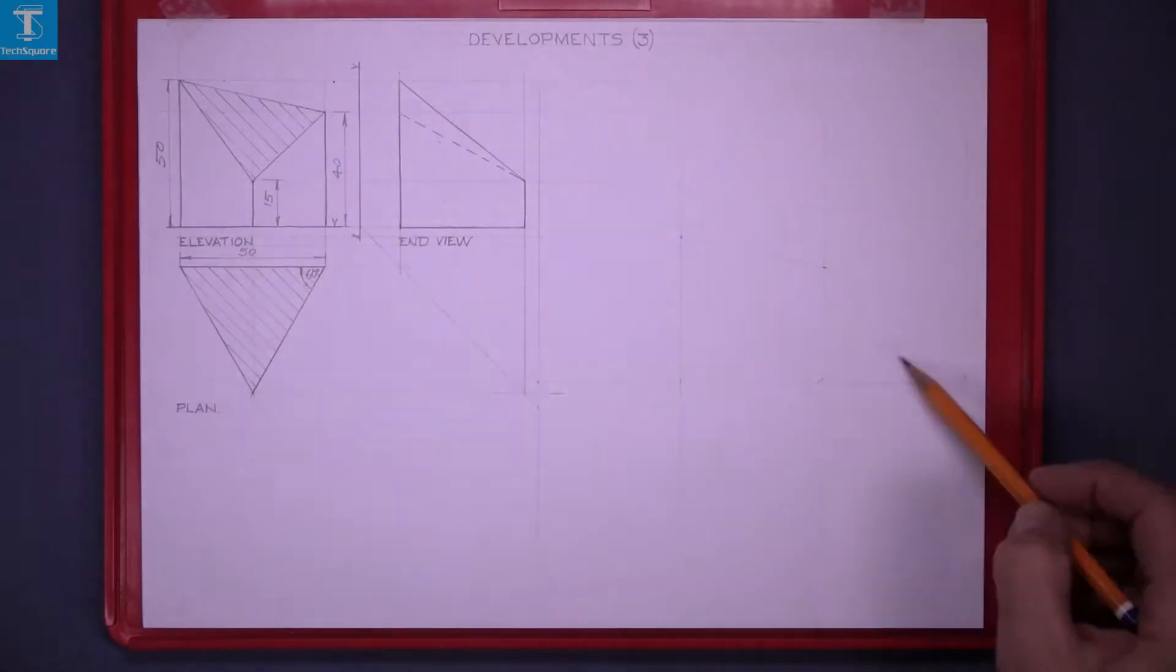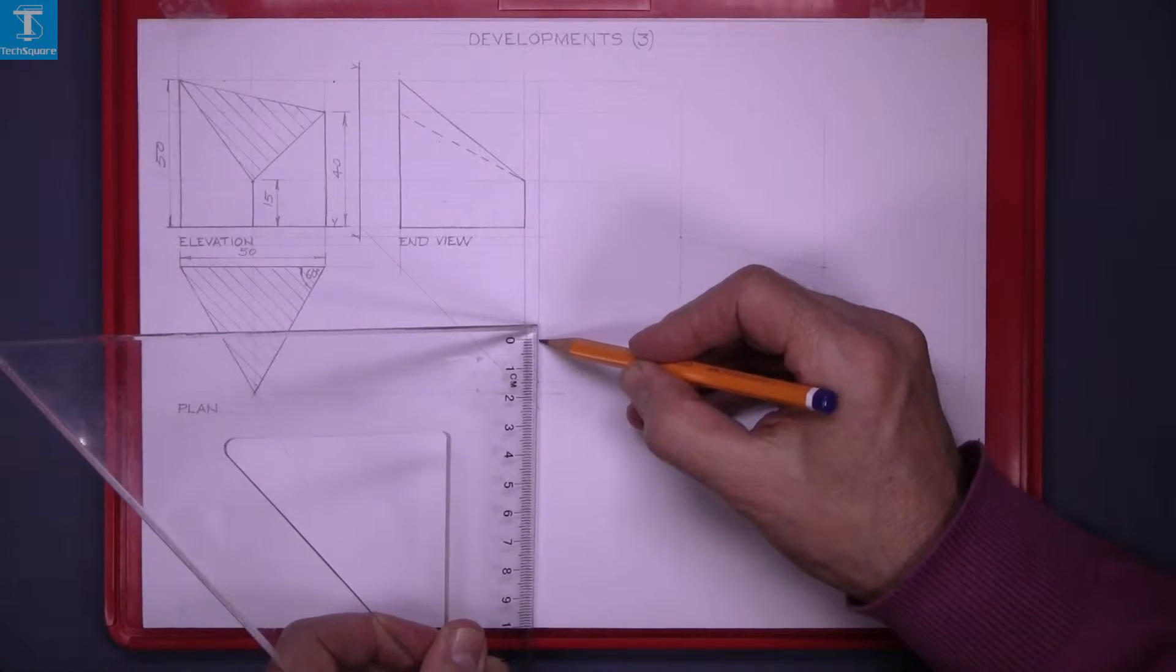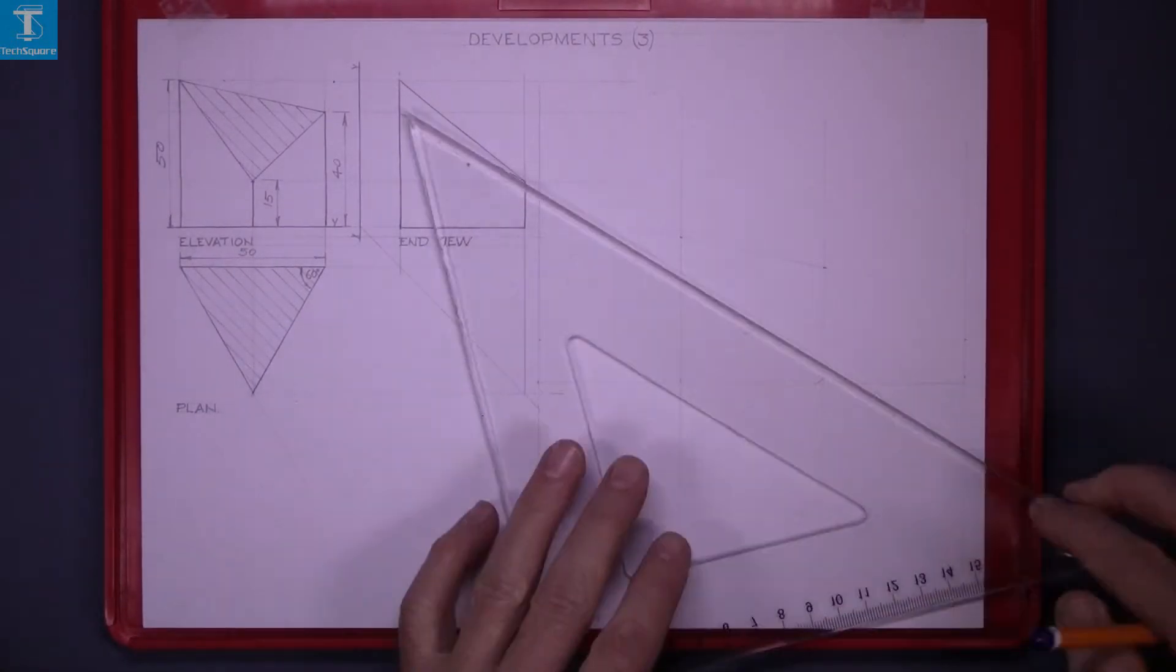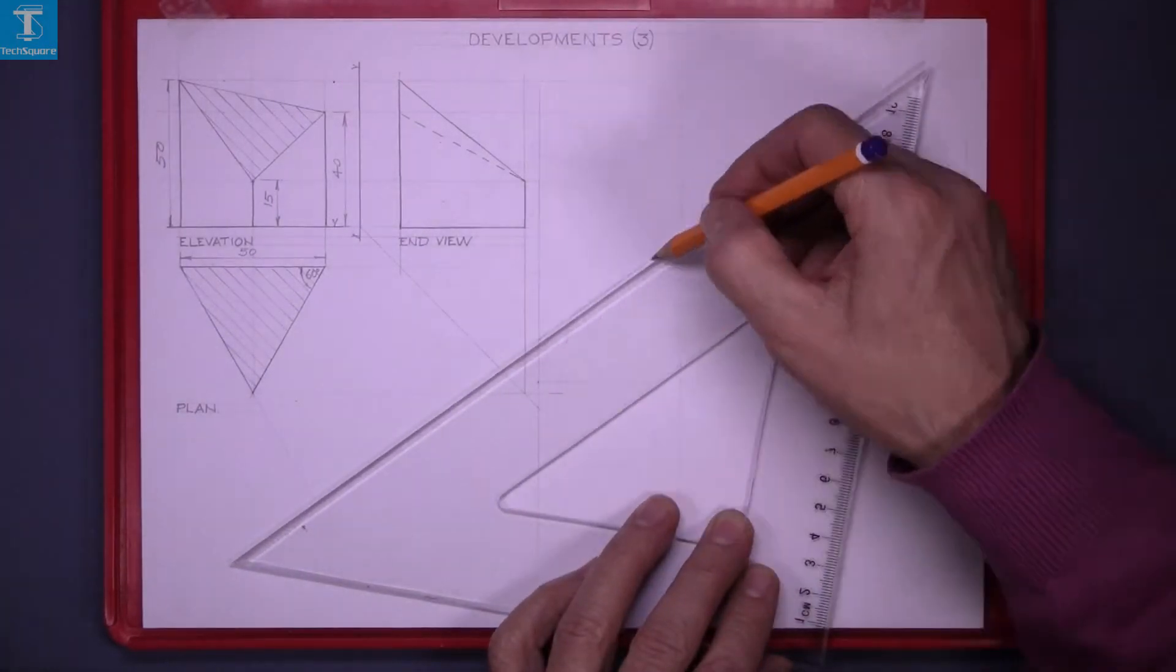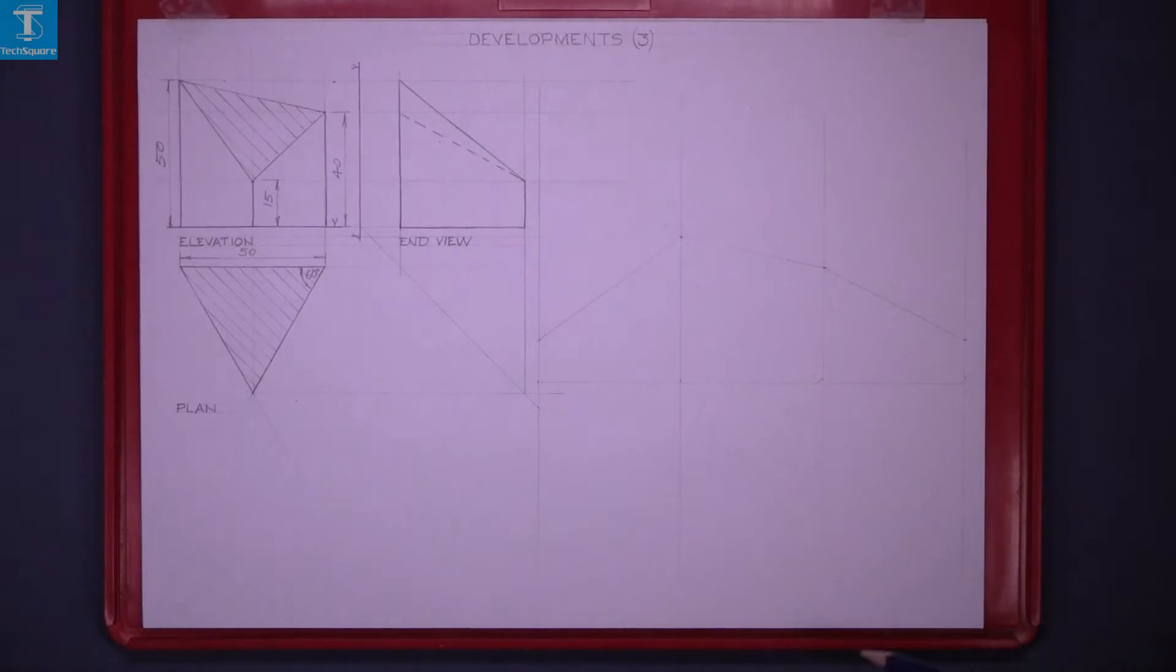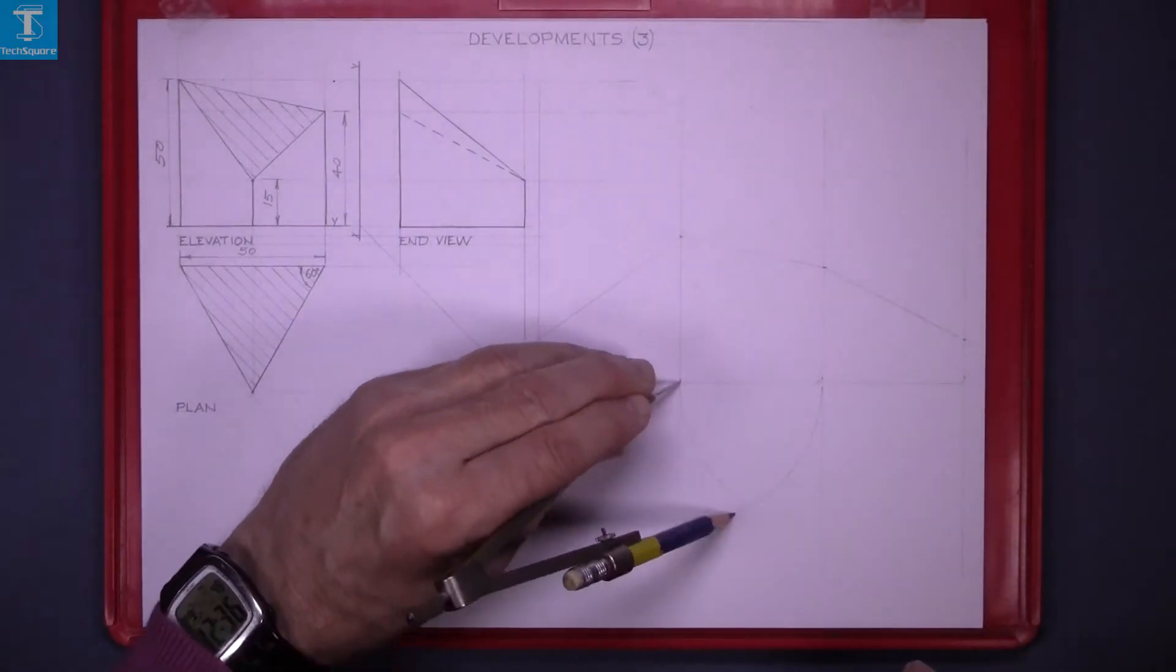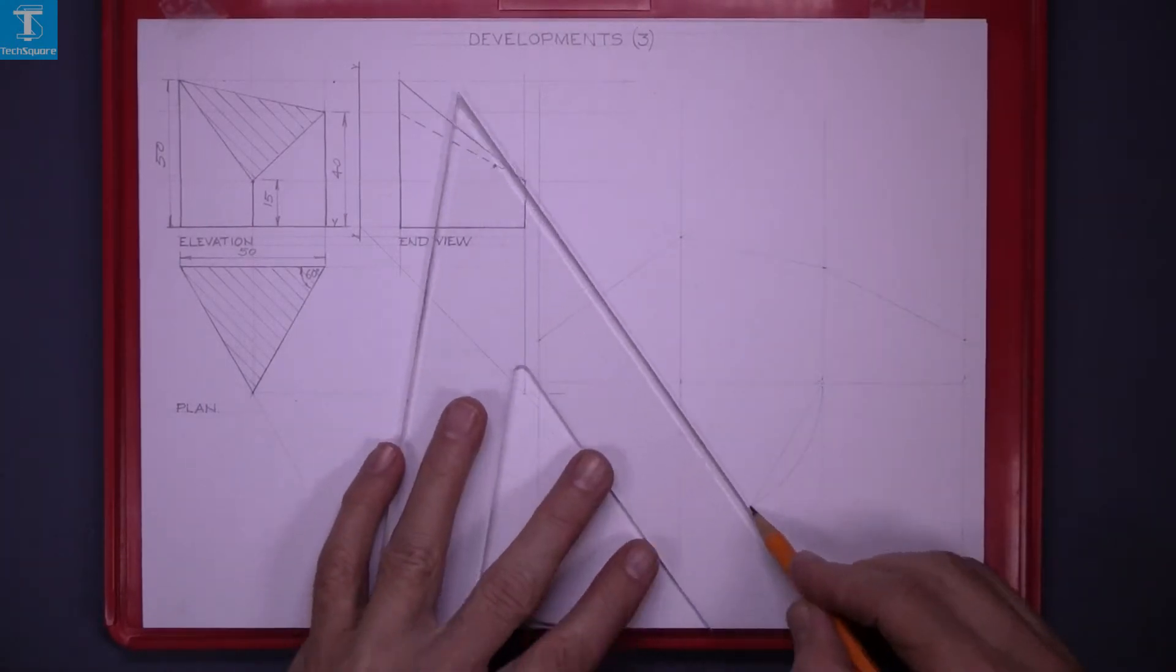Now to get the front point I must measure up 15 on this line and 15 on the line on the right hand side. Now join the points and that's the sides of it. To get the base set the compass to the 50 and draw the two arcs and that gets the equilateral triangle for the base.